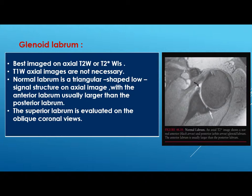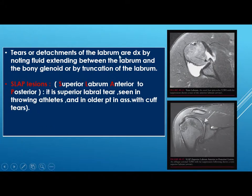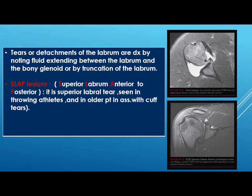The glenoid labrum is best imaged on axial T2-weighted or T2-star weighted images. Normally the labrum appears as a triangular low-signal structure — the anterior labrum is usually larger than the posterior. The superior labrum is evaluated on the oblique coronal image. Tear or detachment is diagnosed by noting fluid extending between the labrum and the bony glenoid, or by truncation of the labrum. SLAP lesions are superior labrum anterior to posterior tears, seen in throwing athletes and older patients with cuff tears.